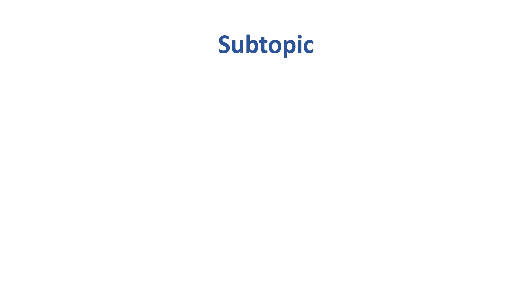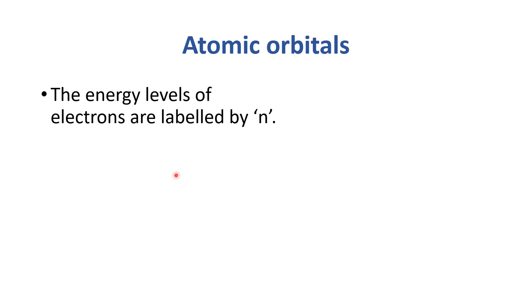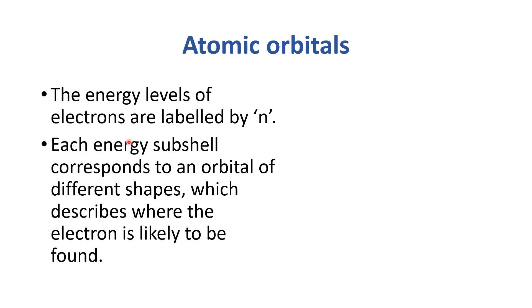The topic of discussion is atomic structure and the subtopic is shapes of atomic orbitals. Let's see what atomic orbitals are. The energy levels of electrons are labeled by n. Each energy subshell corresponds to an orbital of different shapes, which describes where the electron is likely to be found.